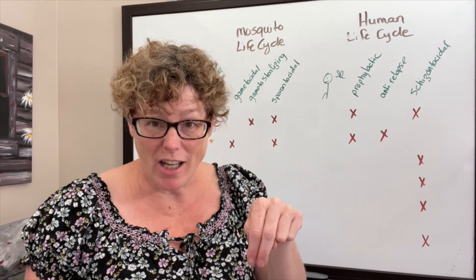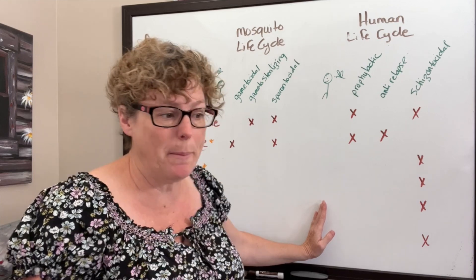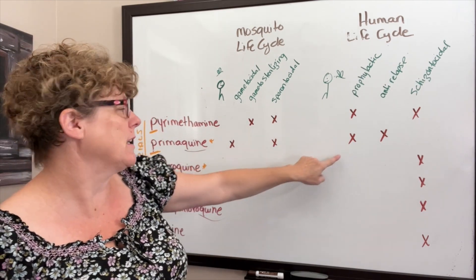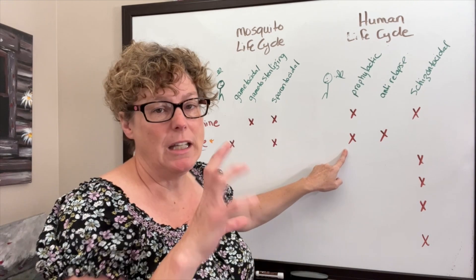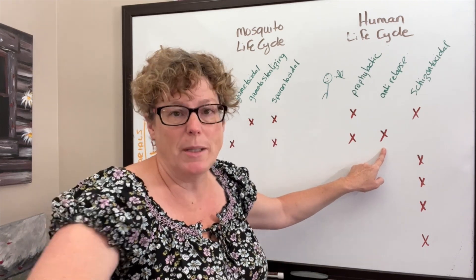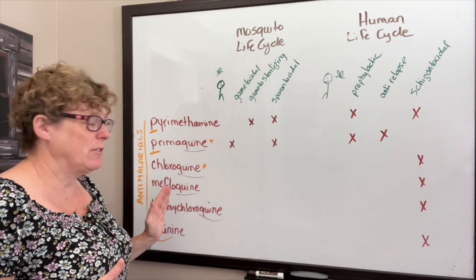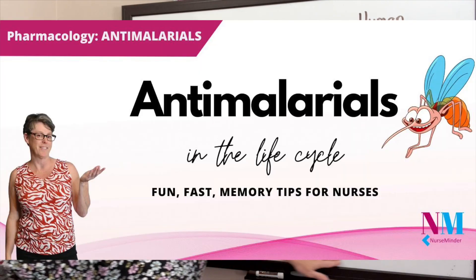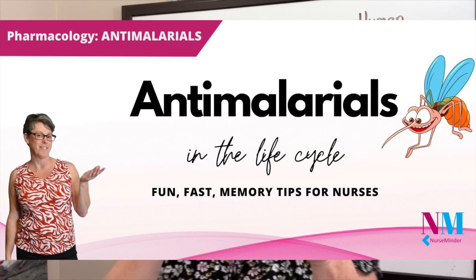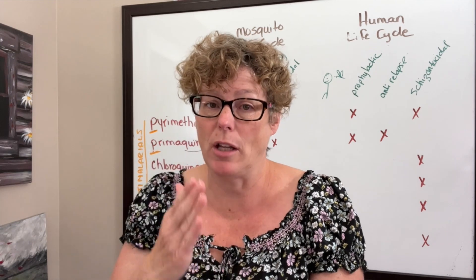Once the mosquito injects sporozoites into a human, there are more options to interrupt and halt the life cycle of malaria. Pyrimethamine and primaquine are both prophylactic in those liver cells — anti-relapse, preventing those schizonts from cycling between dormancy and activity. Here's where we see a major difference: chloroquine, mefloquine, hydroxychloroquine, and quinine are all schizontocidal. These four become both prophylactic and treatment medications, working at the schizontocidal stage when schizonts mature, get released into the bloodstream, and start to invade the red blood cells — actively helping to halt that process.